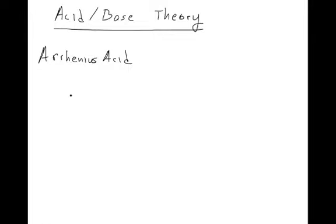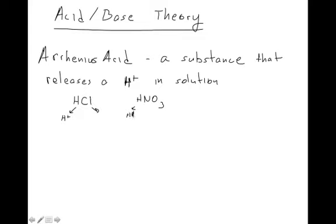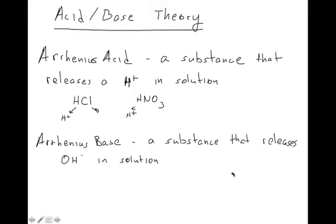We're going to talk about acid-base theory today, looking at two theories: Arrhenius theory and Bronsted-Lowry theory. The definition of an Arrhenius acid is a substance that releases a hydrogen ion in solution. Some examples are HCl and HNO3 — hydrochloric acid and nitric acid. When put into water, they dissolve and a hydrogen ion is released — those are Arrhenius acids.